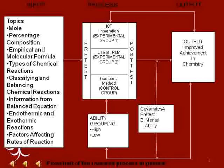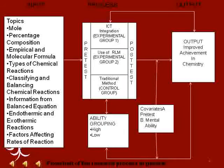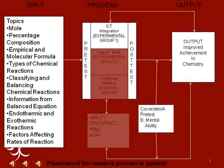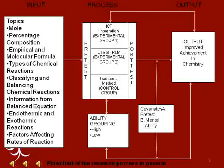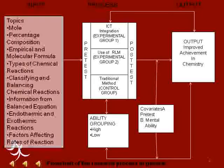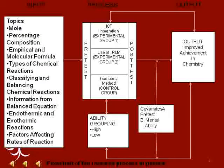The effect of the three teaching methods was measured in terms of post-test scores, and the performance of the students in the post-test were then compared. The different teaching methods were also compared in the light of the differing ability of students grouped as high and low. Furthermore, the existence of interaction effects between teaching methods and ability grouping was also considered. The topics covered were Mole, percentage composition, empirical and molecular formula, types of chemical reactions, classifying and balancing chemical reactions, information from balanced equations, endothermic and exothermic reactions, and factors affecting rates of reaction.